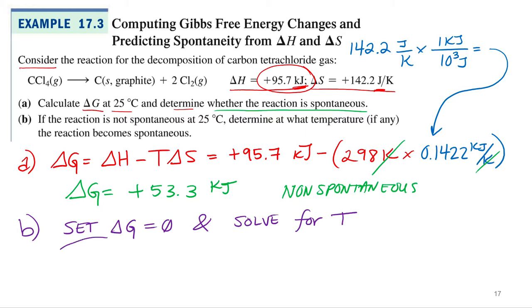So delta G equals zero, we've got zero equals delta H minus T delta S. Let's add T delta S to both sides, shall we? Good. So T delta S equals delta H. Then what do I do? Divide by delta S. Okay, so we've got temperature equals delta H over delta S, and then we can calculate.